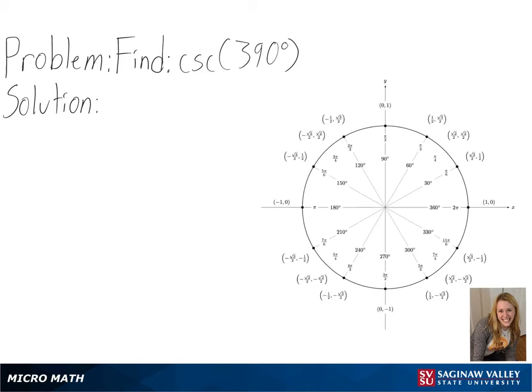We can see here that our value is larger than 360 degrees, so we will start out by separating our 390 by 360 plus 30 degrees.